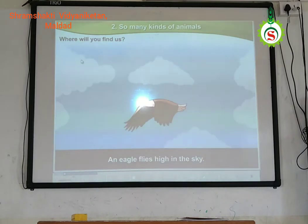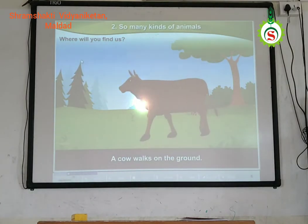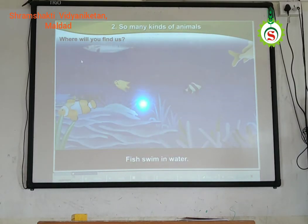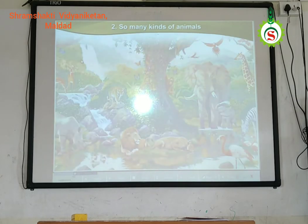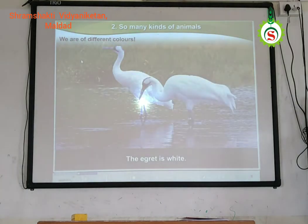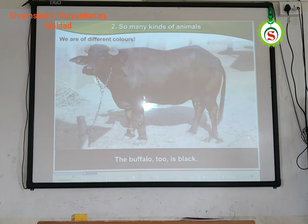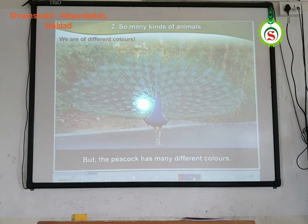An eagle flies high in the sky. A cow walks on the ground. Fish swim in water. We are of different colors. The eagle is white. The crow is black. The buffalo too is black. But the peacock has many different colors — and the peacock is so beautiful.